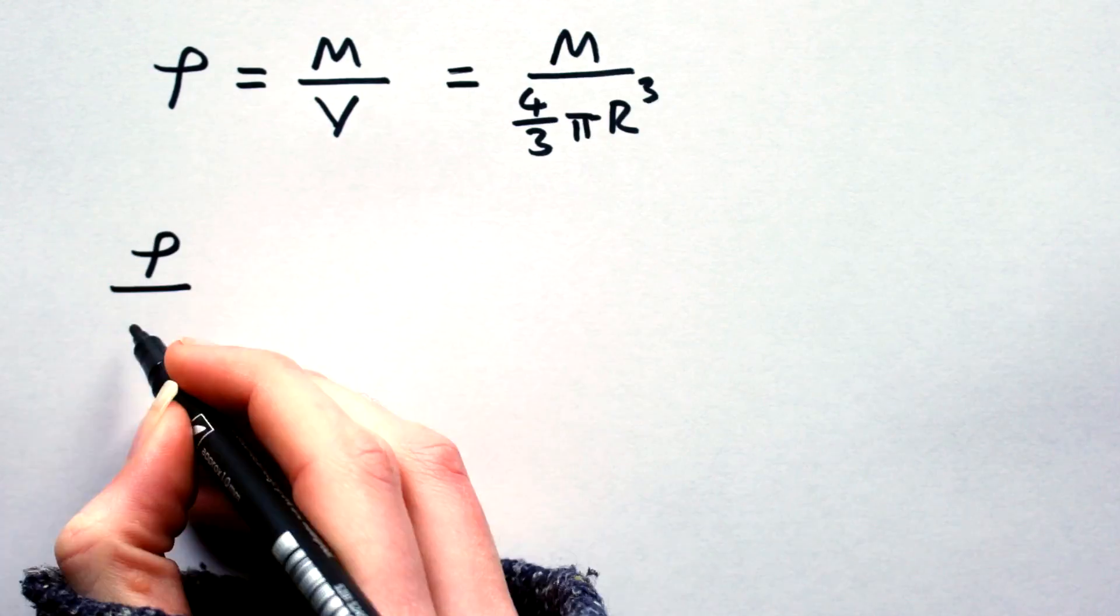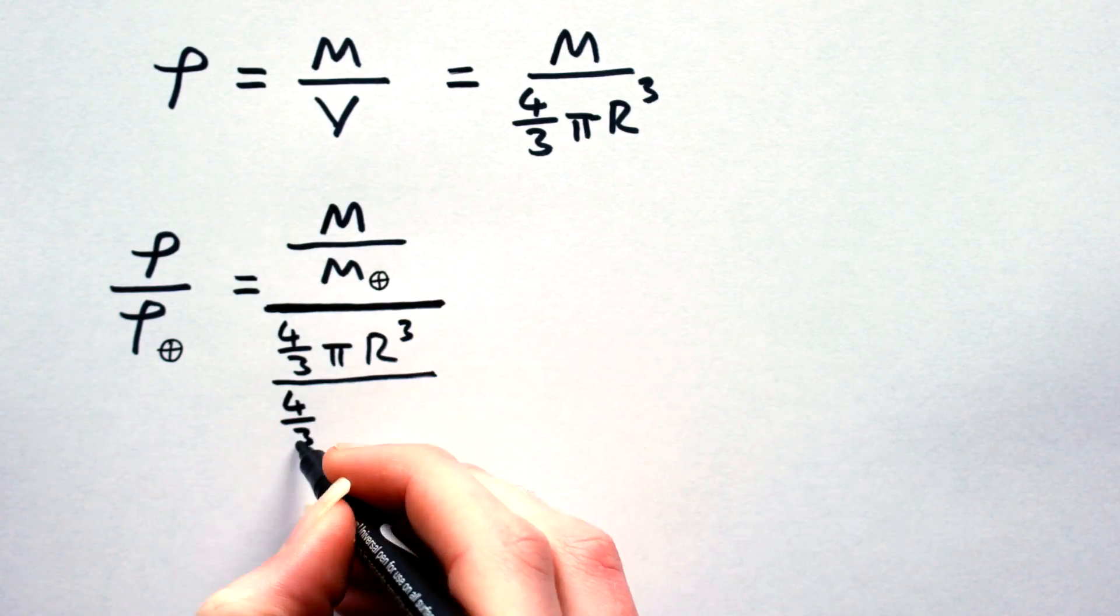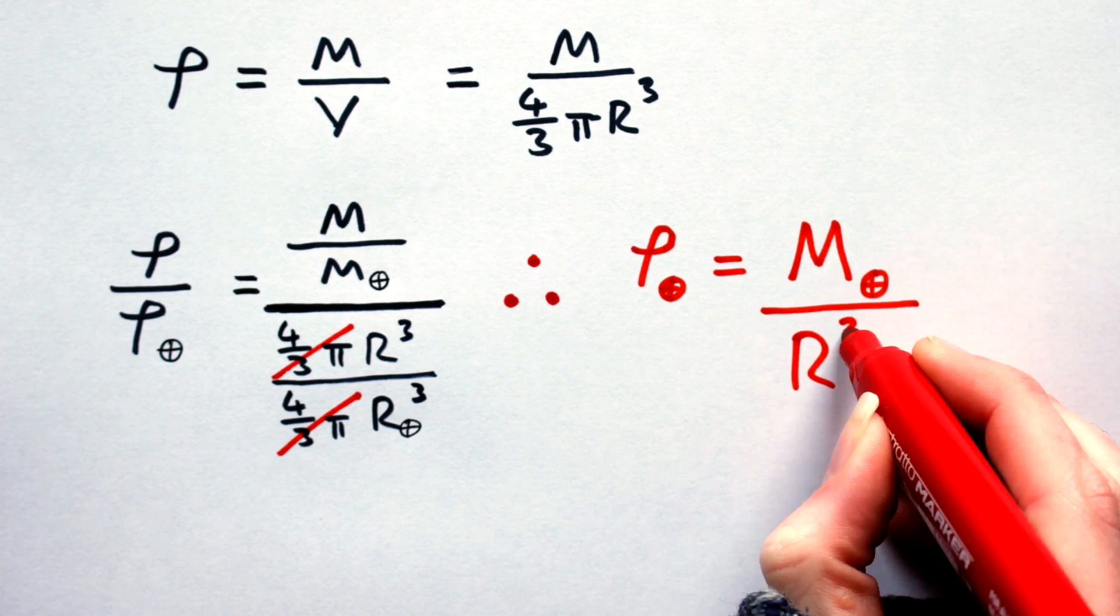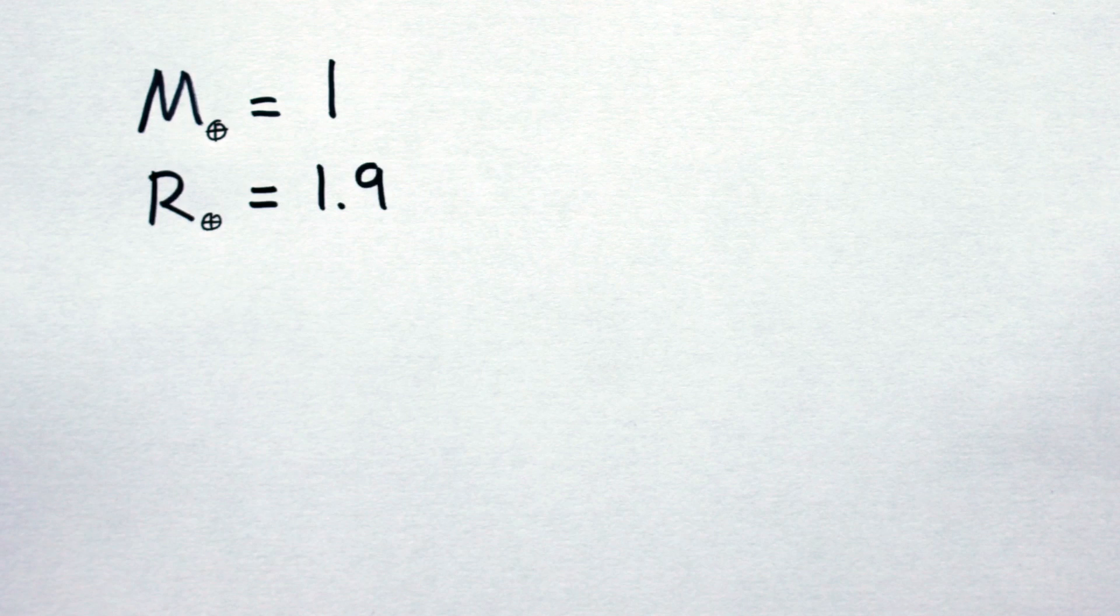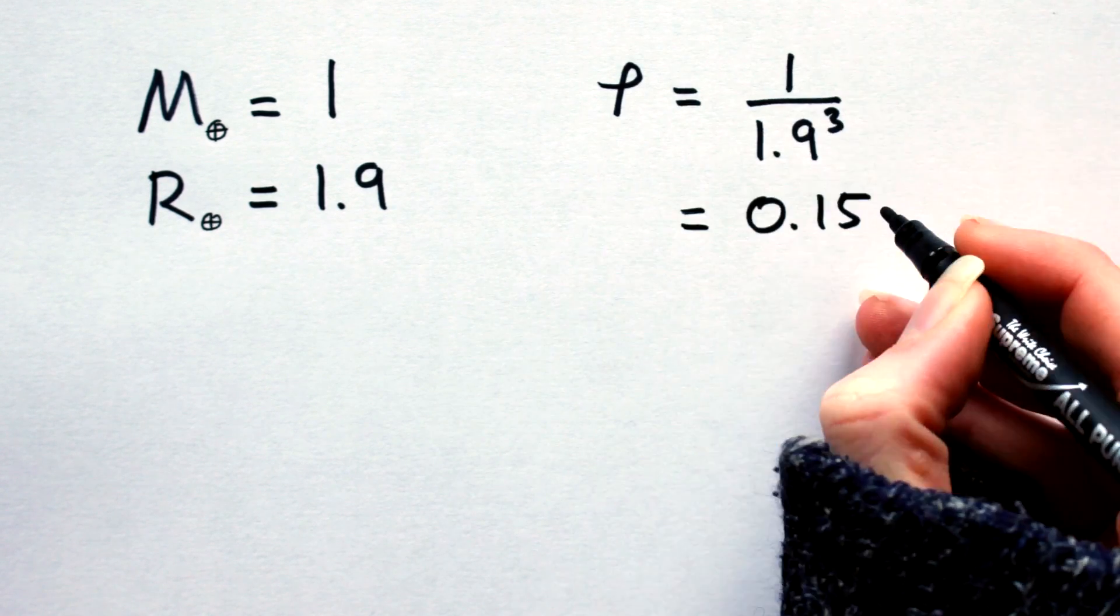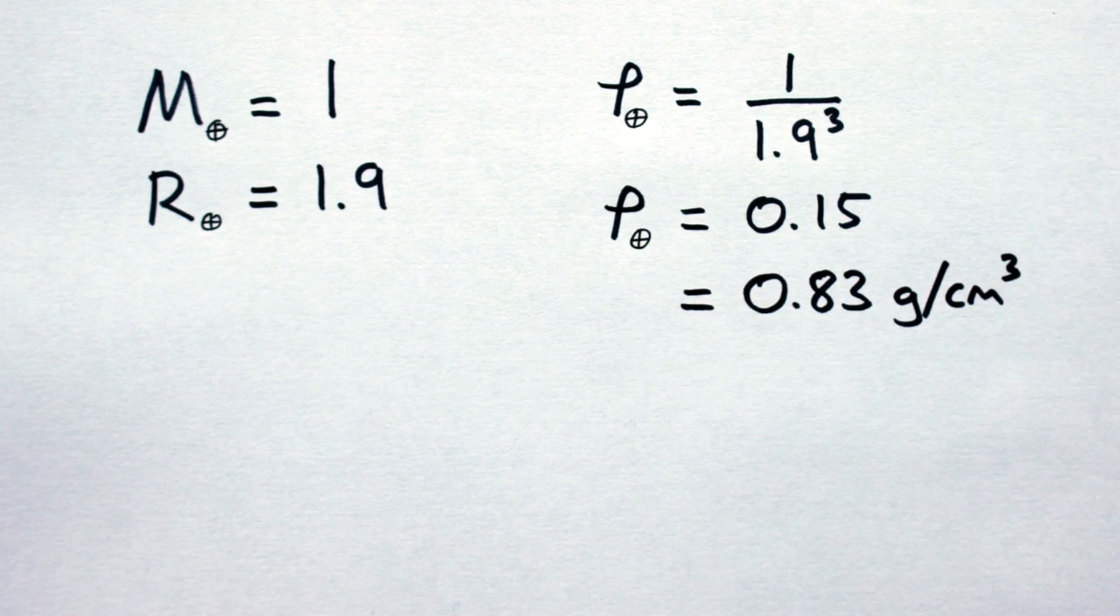So now we have some idea of what sort of mass and radius we are dealing with with respect to each planetary type. Let's plug in some values and see what happens. I'm going to adapt their density formula slightly like this to give me an answer relative to Earth's density. So let's say I have a planet whose mass is 1 Earth mass and whose radius is 1.9 Earth radii. This gives me a density of 0.15 or 0.83 grams per centimeter cubed.